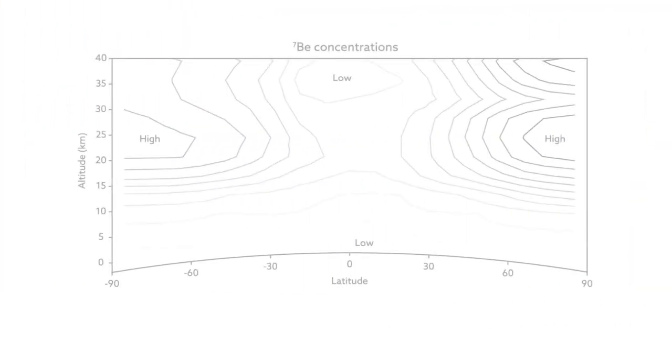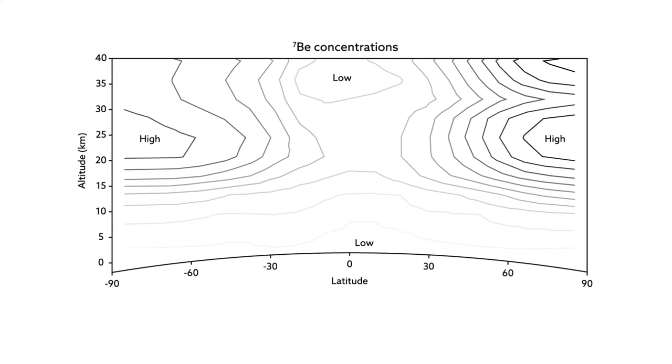Beryllium-7 serves as an incredibly useful proxy for monitoring these large-scale processes over time. Because you tend to find more of the isotope the higher in altitude you go, a rise in the tropospheric ceiling, or tropopause, leads to higher beryllium-7 concentrations measured at the Earth's surface.